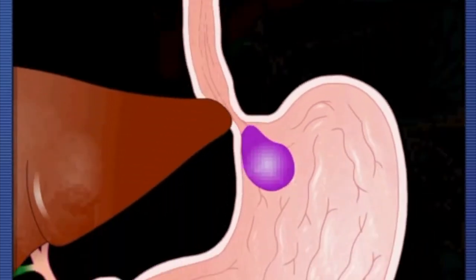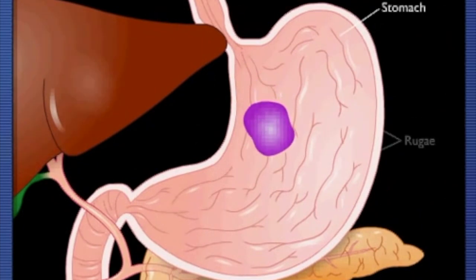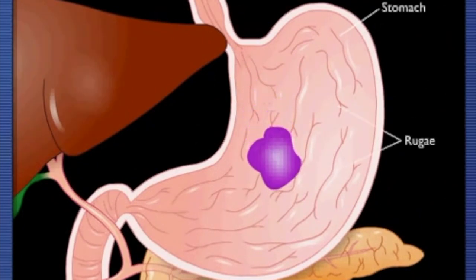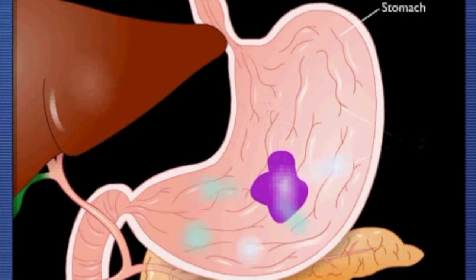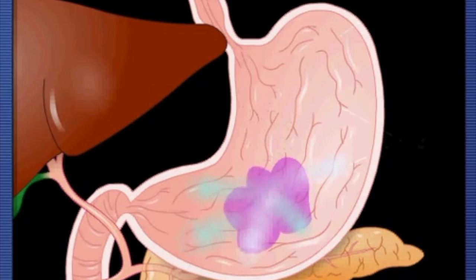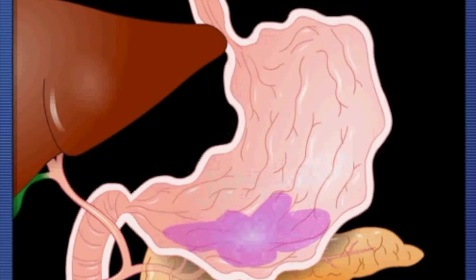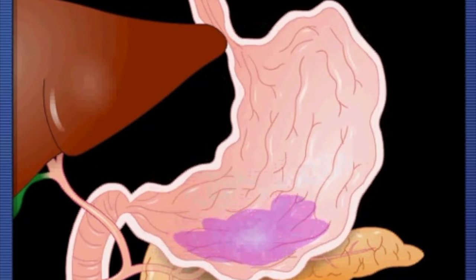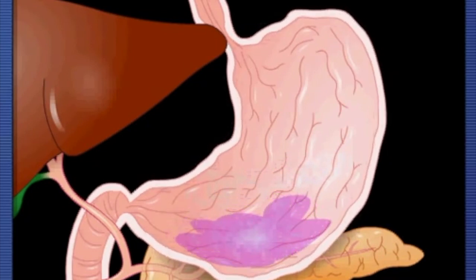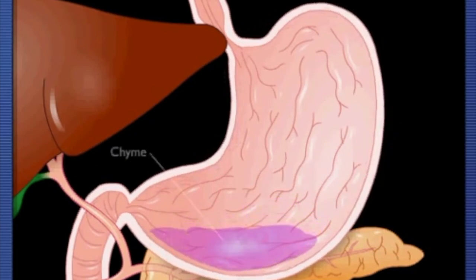The bolus now enters the stomach. Folds in the stomach wall, called rugae, allow for expansion as the stomach fills. Stomach cells secrete hydrochloric acid, pepsinogen, and various regulatory hormones that chemically digest the bolus. Muscular contractions churn the stomach contents to further break down the bolus and mix it with stomach secretions to form a thick liquid called chyme.